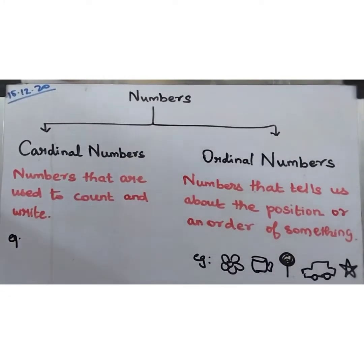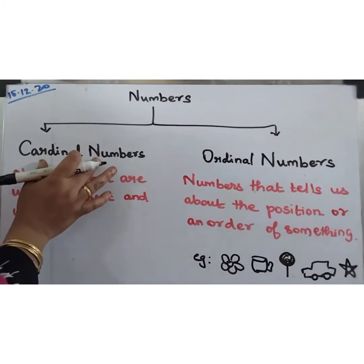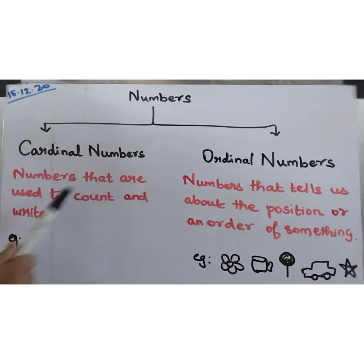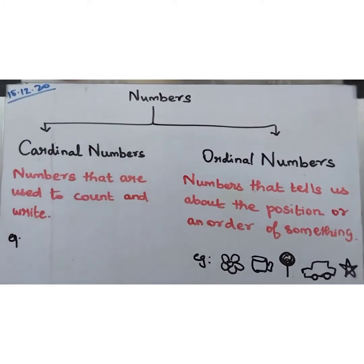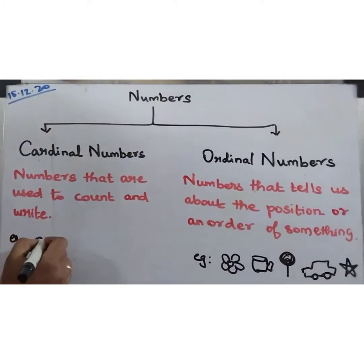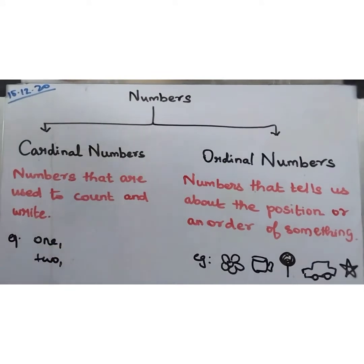Today let's revise first cardinal and ordinal numbers. As we studied before, what are cardinal numbers? Numbers that are used to count and write. For example, one pencil, two erasers — one, two, three like that. Five pencils, five erasers like that.